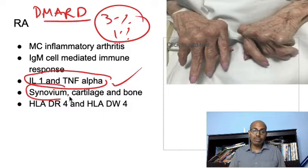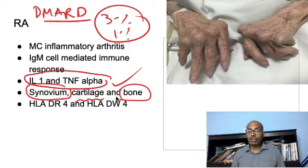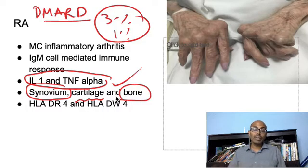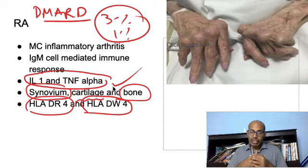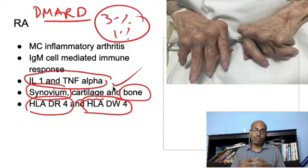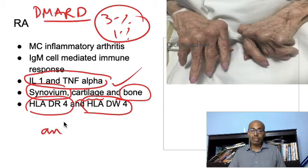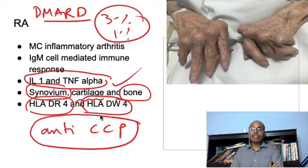Rheumatoid arthritis first affects the synovium, then the cartilage, and finally destroys the whole bone. Periarticular osteoporosis or periarticular osteopenia is seen. There is an HLA association — DR4 and DW4. Rheumatoid arthritis affects the MCP joints, wrist joint, elbow joint, shoulder, knee, and other joints. The most specific and sensitive test for diagnosis of rheumatoid arthritis is anti-CCP.